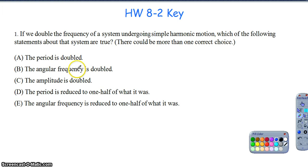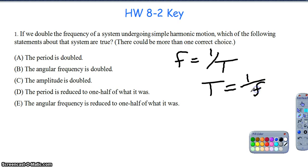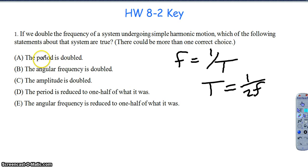If we look at option A, 'the period is doubled' — the key relationship is frequency equals 1 over the period, or equivalently, period equals 1 over the frequency. So if I double the frequency, I'm cutting the period in half. So the period doesn't double. But looking at option D, 'the period is reduced to one half of what it was' — that is one of the correct answers.